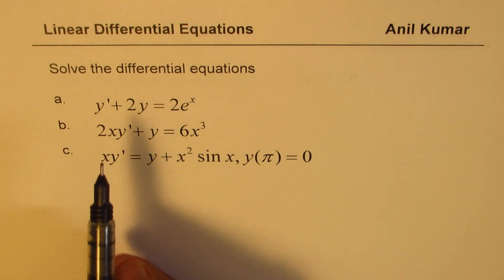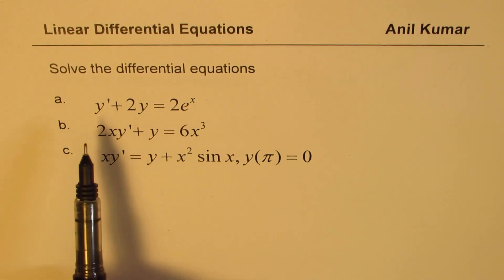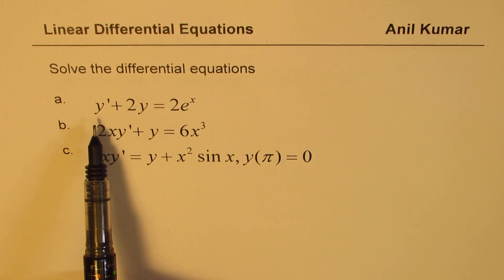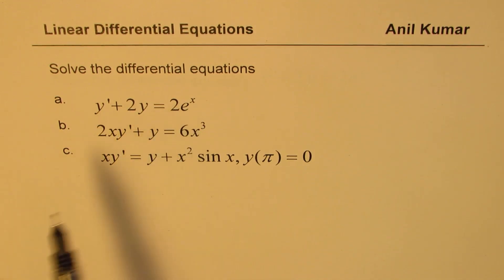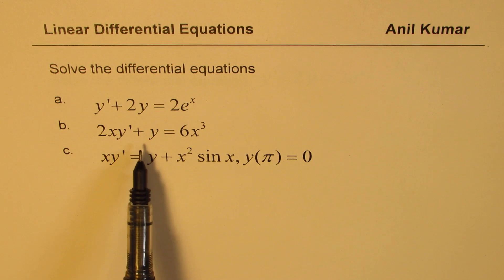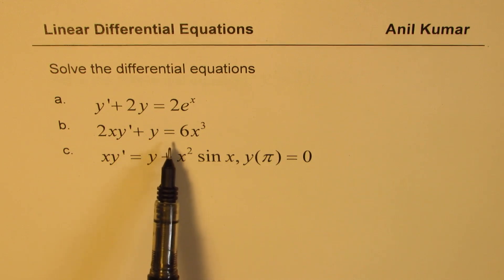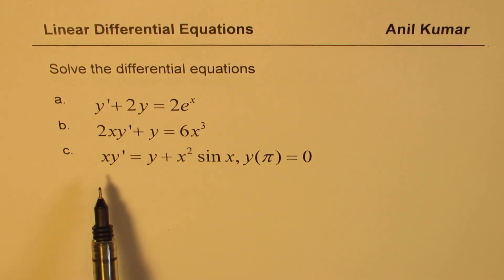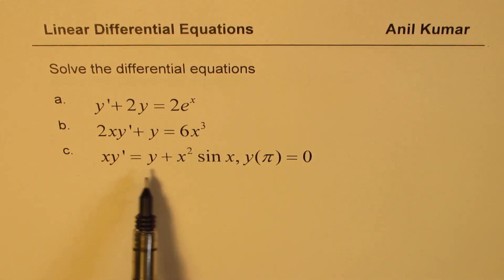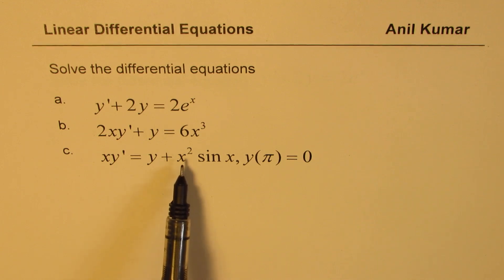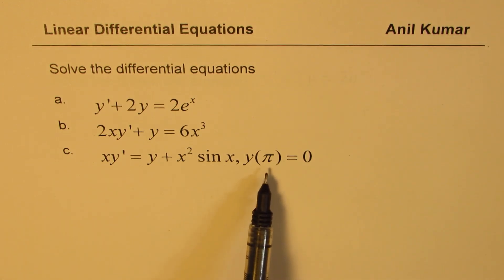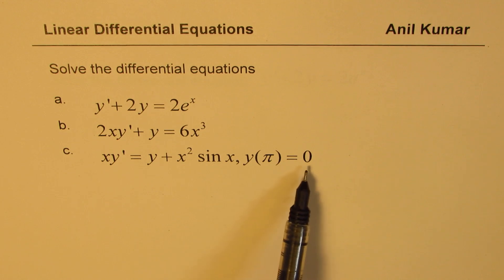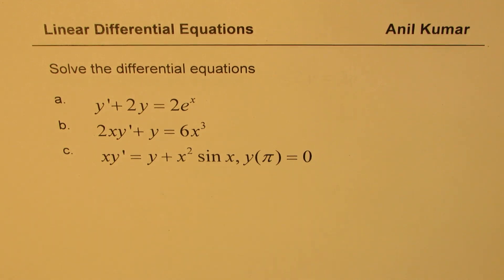We need to solve three differential equations: dy/dx plus 2y equals 2e to the power of x; 2xy prime plus y equals 6x cubed; and xy prime equals y plus x squared sin x, where we are given the initial condition y(π) equals 0.